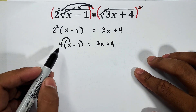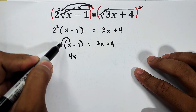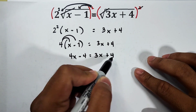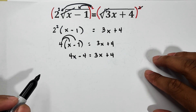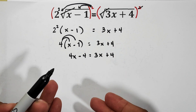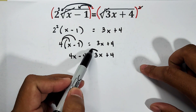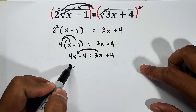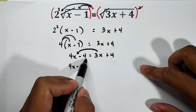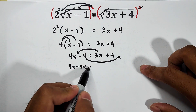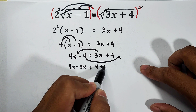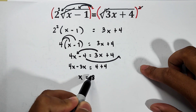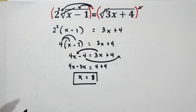Now we distribute 4 using the distributive property: 4 times x is 4x, then 4 times negative 1 is negative 4, equal to 3x plus 4. So we combine like terms — transpose 3x to the other side, giving 4x minus 3x, and transpose negative 4 to the other side, which becomes plus 4. Simplified: x equals 8. This is the answer for the given problem.